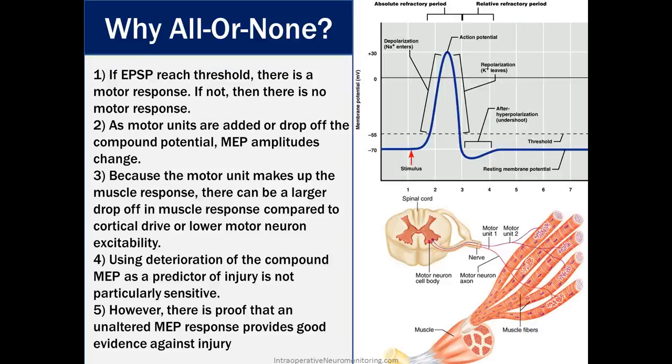Why should we go with an all or none? If excitatory postsynaptic potentials reach threshold, there is a motor response. If not, then there is no motor response. As motor units are added or dropped off the compound potential, MEP amplitudes change. And here's the big factor. Because the motor unit makes up the muscle response, there can be a larger drop-off in the muscle response compared to cortical drive or lower motor neuron excitability. Using deterioration of the compound MEP as a predictor of injury is not particularly sensitive. However, there is proof that an unaltered MEP response provides good evidence against injury.